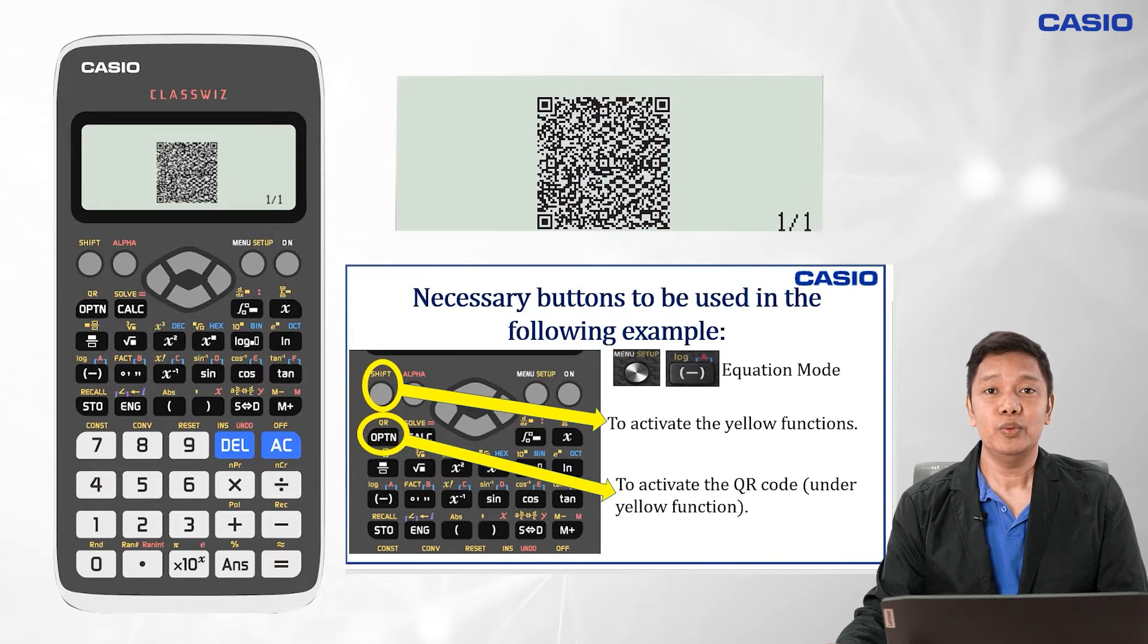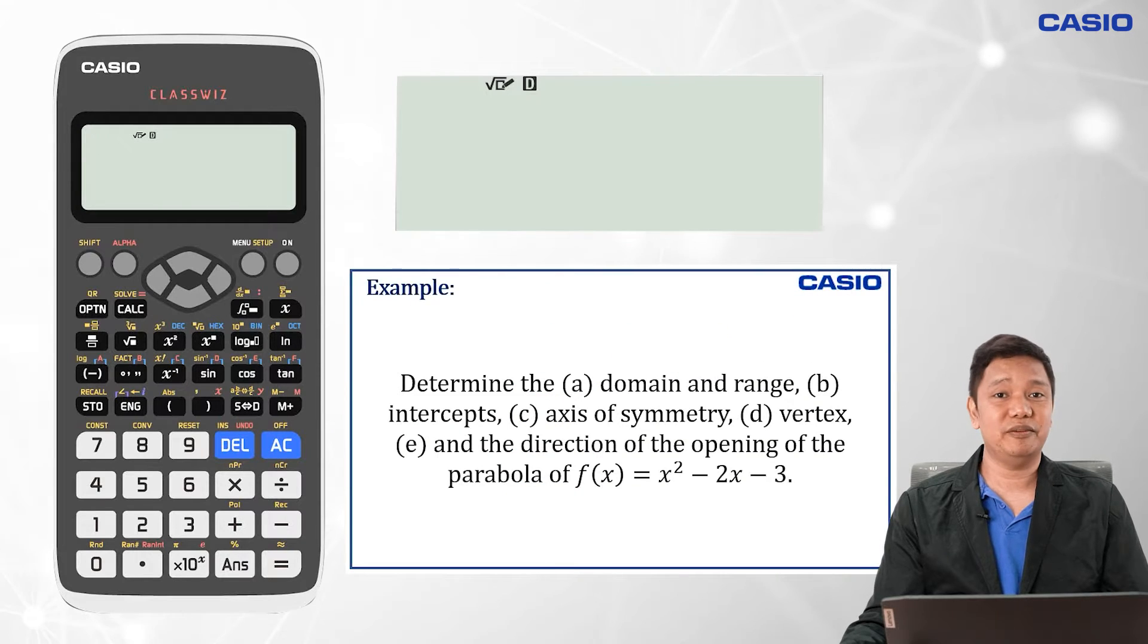In this lesson, we will be exploring Shift and Options to activate the QR code and see the graph of quadratic functions. In graphing quadratic functions, we need to determine certain properties: the domain and range of the function, the intercepts, and the axis of symmetry.